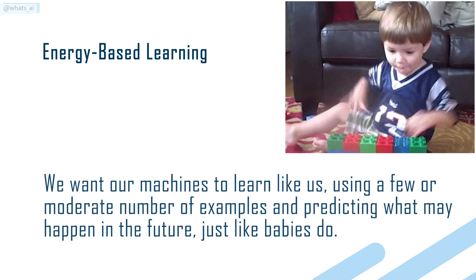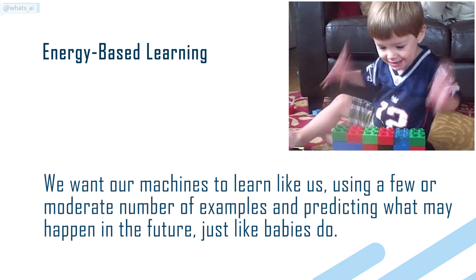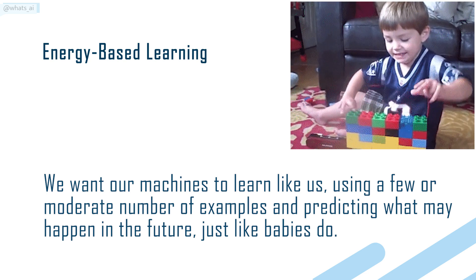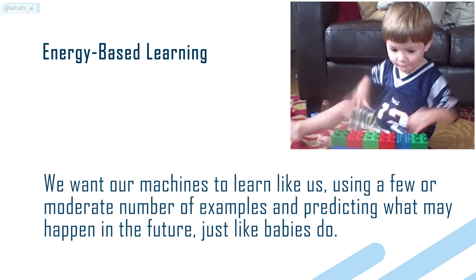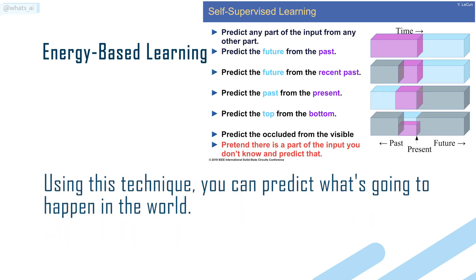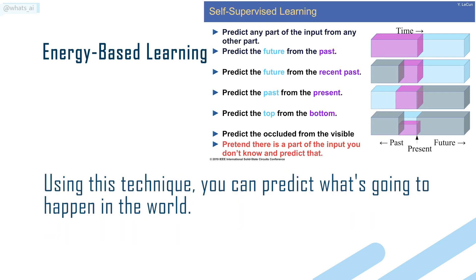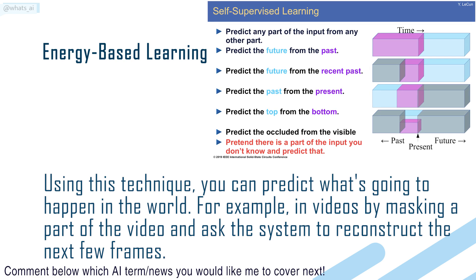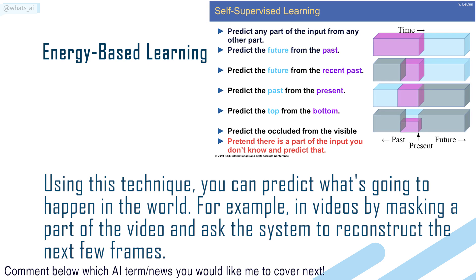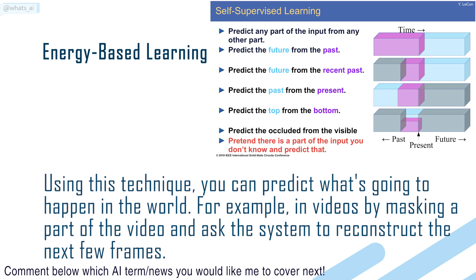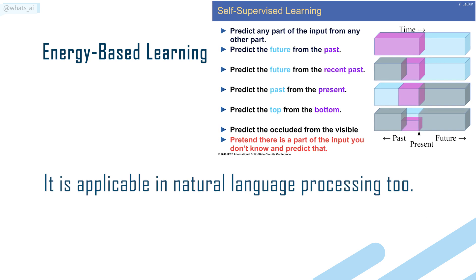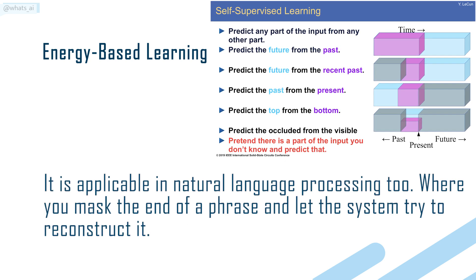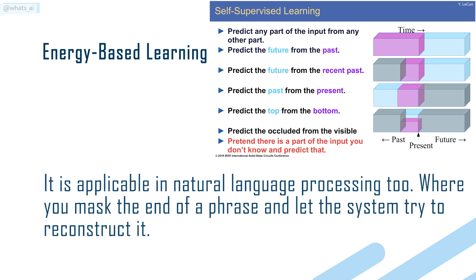We want our machines to learn like us, using a few or moderate number of examples and predicting what may happen in the future, just like babies do. Using this technique, you can predict what's going to happen in the world — for example, in videos by masking a part of the video and asking a system to reconstruct the next few frames. It is applicable in natural language processing too, where you mask the end of a phrase and let the system try to reconstruct it.